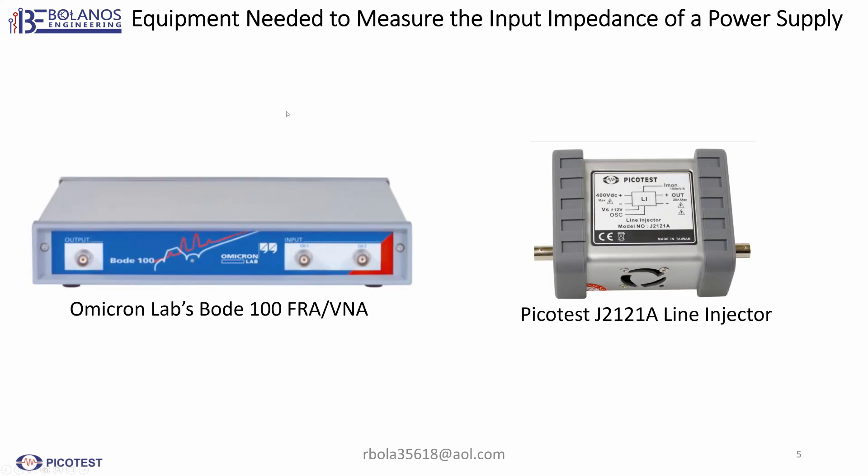So what equipment do I need? Well the equipment that I would need is a FRA, like the Bode 100 from Omicron. And then you're also going to need a line injector like the Picotest J2121A. You need both of these to measure. By the way, you can use these to also measure the input impedance, but in this case we're going to measure the negative resistance.